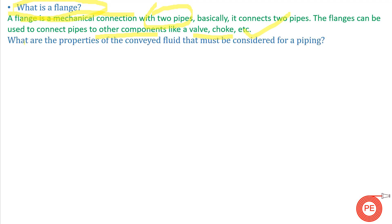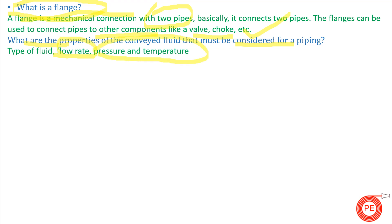Next question: what are the properties of the conveyed fluids that must be considered for piping? The properties of fluid that must be known are the type of fluid, the flow rate, and the pressure and temperature of the fluid that will be transported. These properties must be known before a fluid is conveyed through piping.